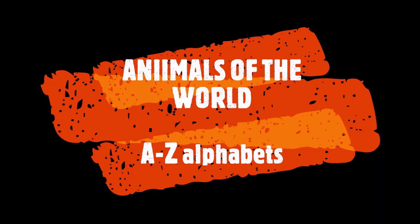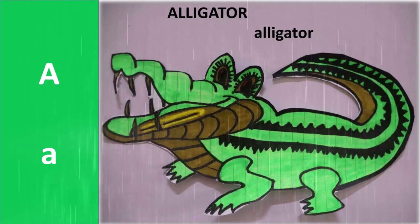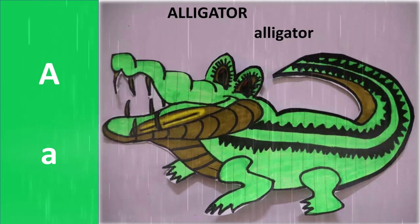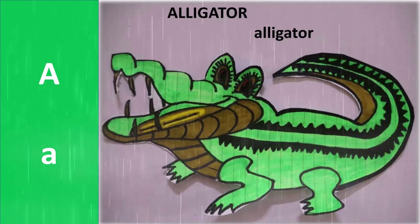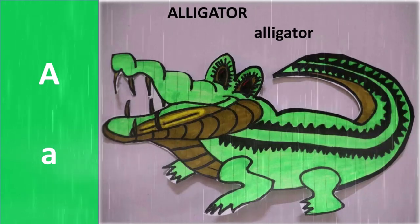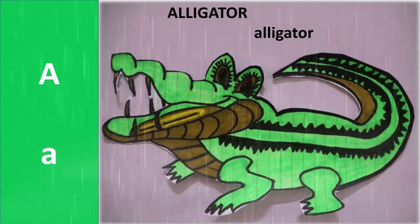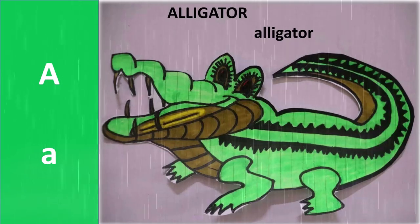Animals of the World, A to Z Alphabets. Alligator. A is for Alligator.